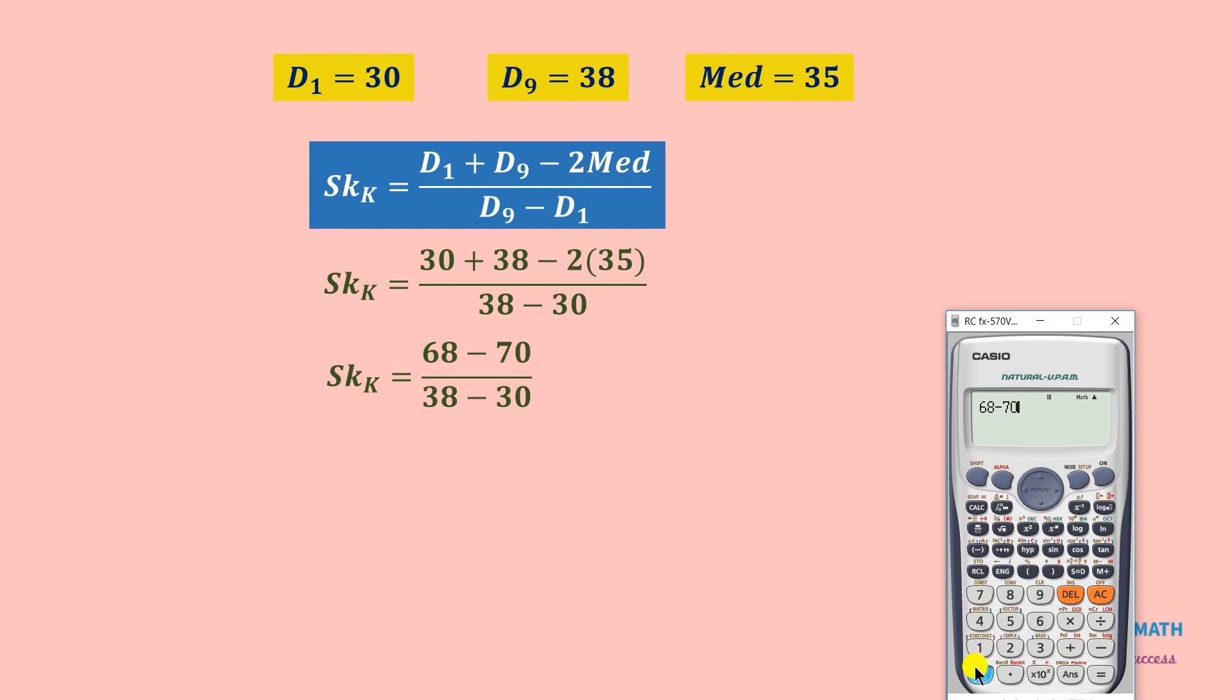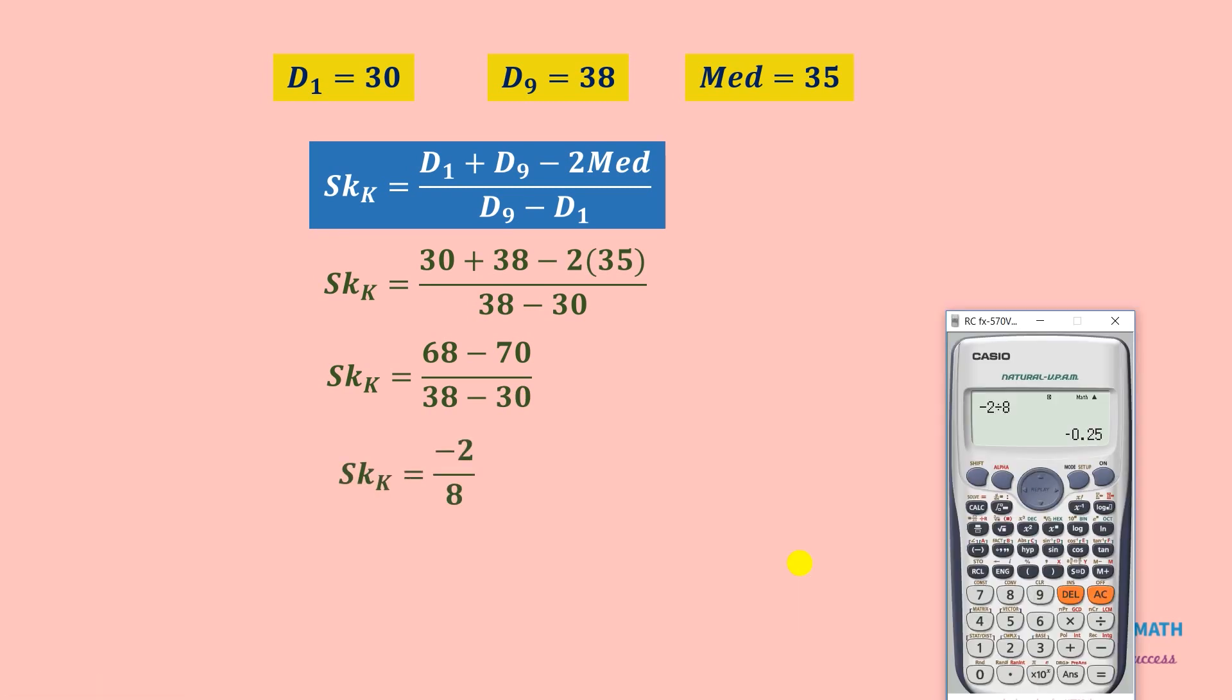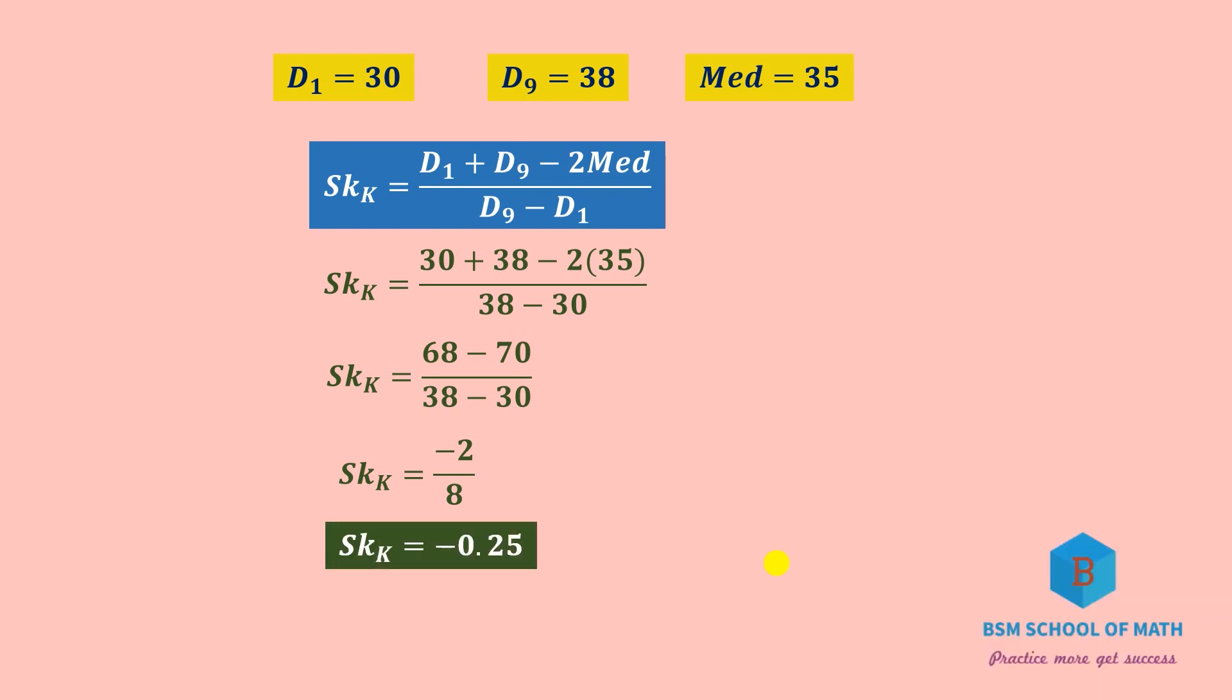In the denominator, 38 minus 30 is 8. So minus 2 divided by 8 equals minus 0.25. Therefore, SK_K equals minus 0.25. Since it's negative, the given data is negatively skewed.